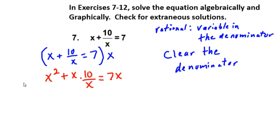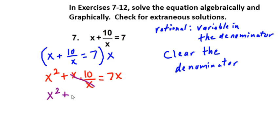We've preserved equality by multiplying both sides of this equation by x, but we've also enabled ourselves to cancel this x in the denominator by crossing out this x over x in the second term. So we have remaining the quadratic equation x squared plus 10 equals 7x.